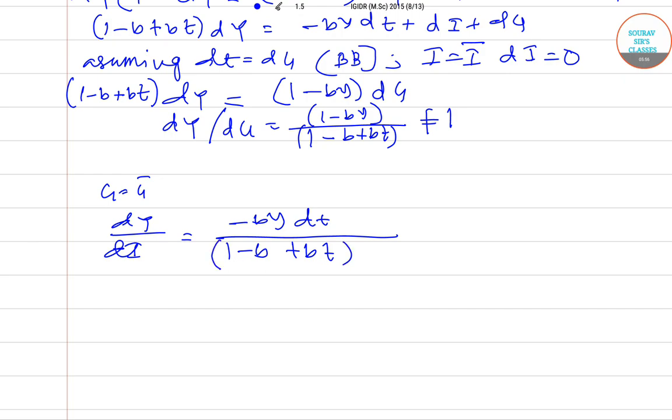So this is for the proportional tax where tax is a function of income. And in the previous case for the lump sum tax it was dY/dI equals minus B dT divided by (1 minus B).